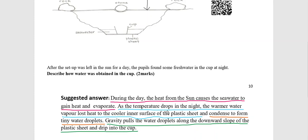So the first part mentions the heat from the sun causes the seawater to gain heat and evaporate. Secondly, the temperature drops at night, and then the warmer water vapour lost heat to the cooler inner surface of the plastic sheet. And thirdly, because when it lost heat, the water vapour will condense to form tiny water droplets. And finally, gravity pulls the water droplets along the downward slope of the plastic sheet and drip into the cup.